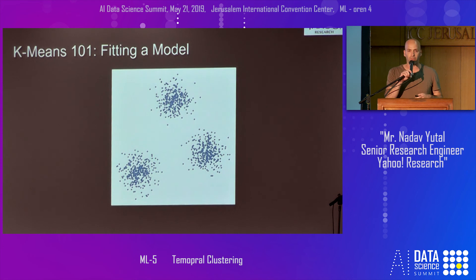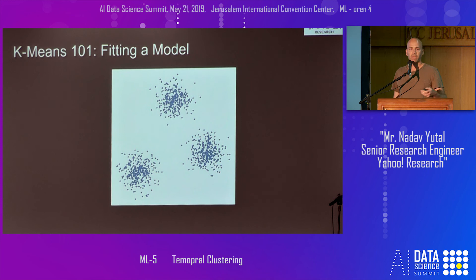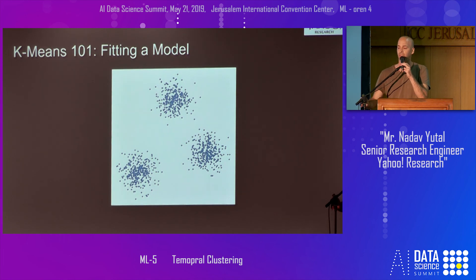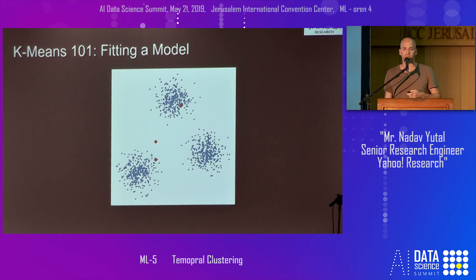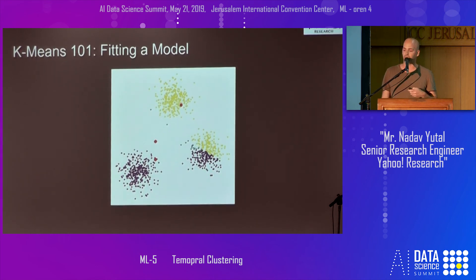As our algorithm name suggests — FunKMeans — we are a variant of k-means. K-means is popular because of its simplicity. Given data objects and a number k representing how many clusters we want to produce, we first initiate the centroids. Each centroid represents a cluster — the center of the cluster. We then assign each object to one of the clusters by choosing the one with the shortest distance between each object and the centroid.